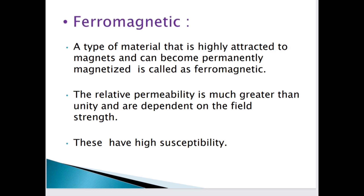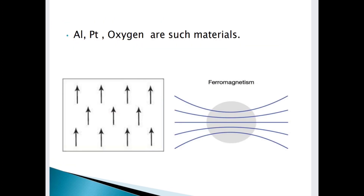The examples of ferromagnetic materials are iron, aluminum, platinum, and oxygen. This is the ferromagnetic diagram. We will also see paramagnetic and diamagnetic to understand the comparison better.